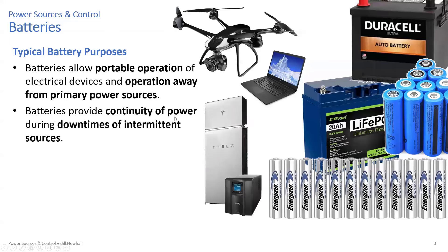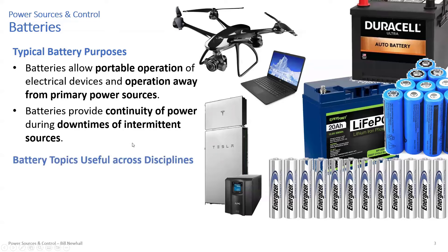Beyond portable devices, batteries provide continuity of power when power goes intermittent — meaning off. A UPS, an uninterrupted power source, is basically a battery system that provides AC power through an inverter so your computer doesn't shut down when a power glitch happens. You can even power your whole house by storing energy from solar or the grid with batteries nowadays.